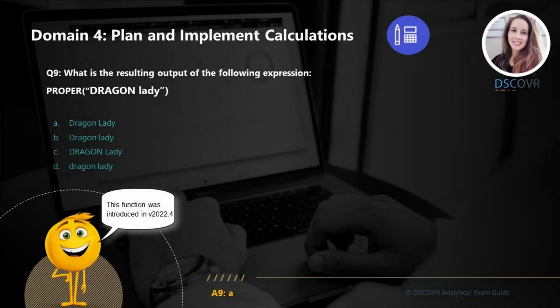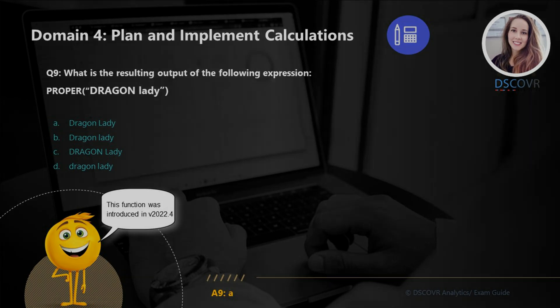Moving on to question number nine — what is the resulting output of the following expression? The answer is 'Proper Dragon Lady'. For those of you who are not familiar with this function, the PROPER function was introduced in Tableau version 2022.4, so it's a fairly new function. Make sure you go ahead and read the documentation because you may see it on the exam.